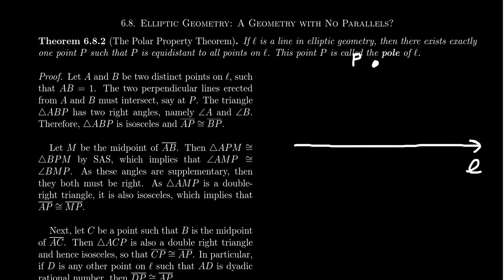The proof will use some calculus notions, which is somewhat unavoidable here. Imagine we have two points A and B, with a unit distance between them. There exist perpendicular lines to L that we can erect out of A and B. As we're in elliptic geometry, these perpendicular lines have to intersect somewhere at a common point. This point of intersection we call P, and it is the candidate for our pole.